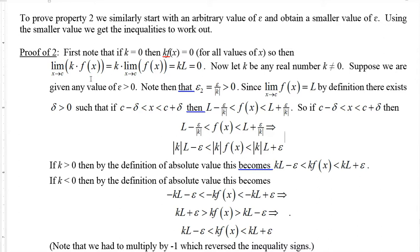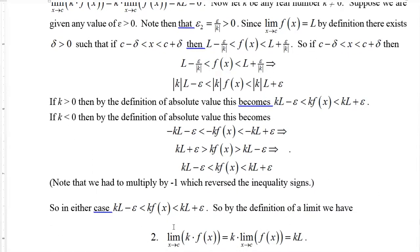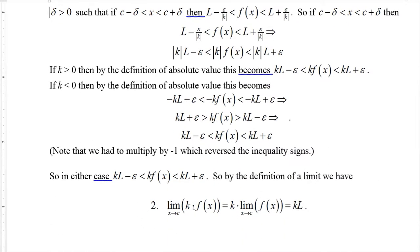So we've shown that for any epsilon we started with, there is a delta — the same one coming from the limit of f(x) — that makes k times L minus epsilon less than k times f(x) less than k times L plus epsilon. Therefore by definition the limit of k times f(x) equals k times L, which is k times the limit of f(x).